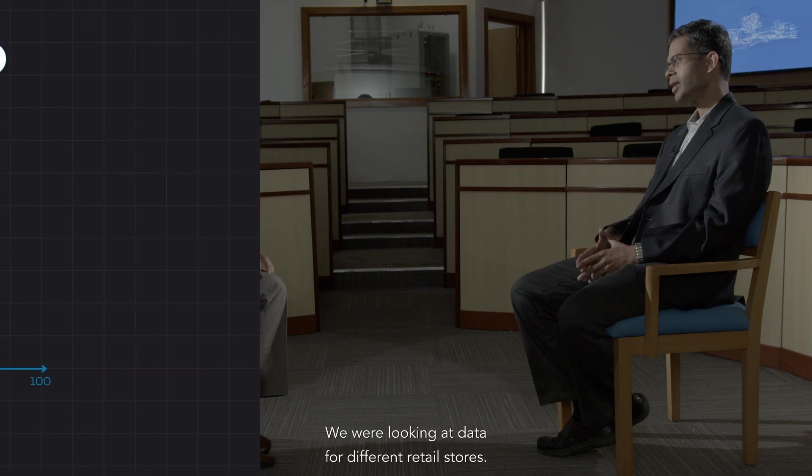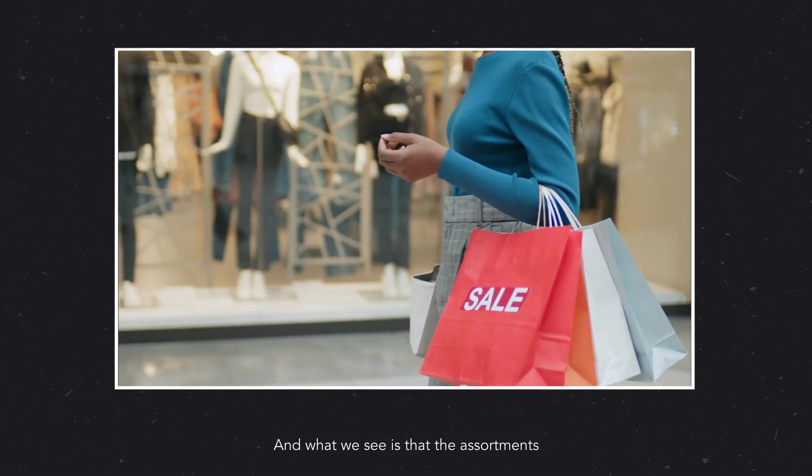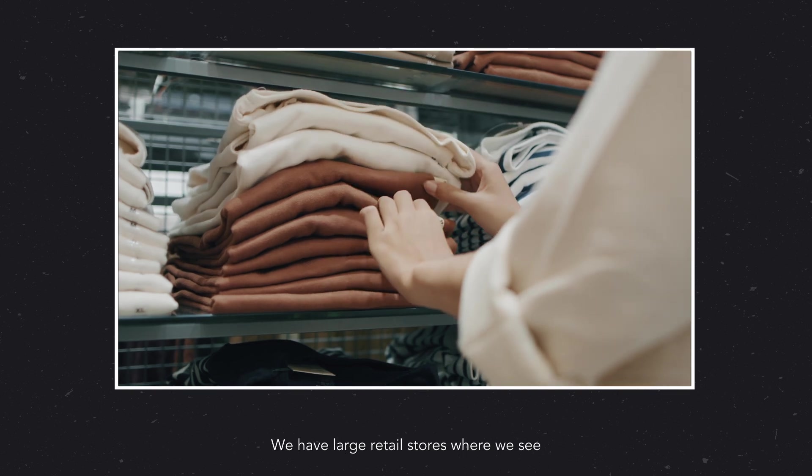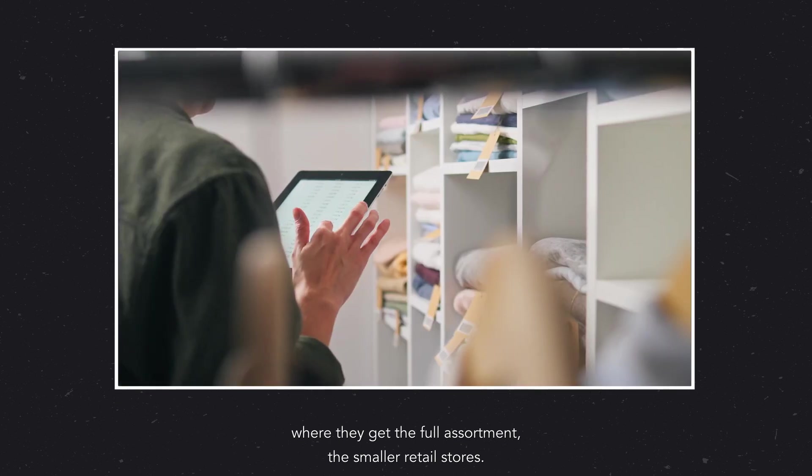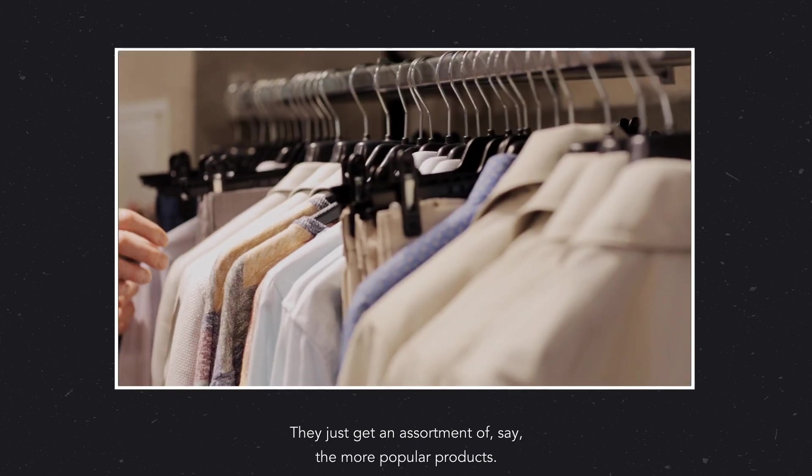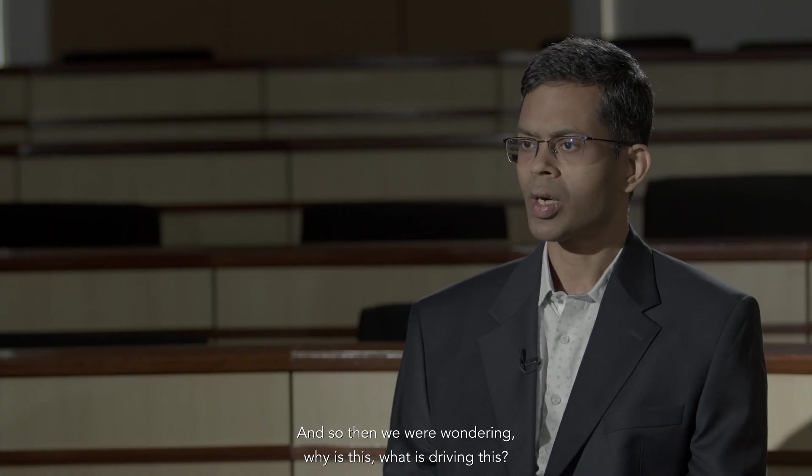So it's very interesting. We were looking at data for different retail stores. And what we see is that the assortments that are made available in these stores are not the same. We have large retail stores where they get the full assortment. The smaller retail stores, they do not get the full assortment. They just get an assortment of the more popular product. And so then we were wondering, why is this? What is driving this?